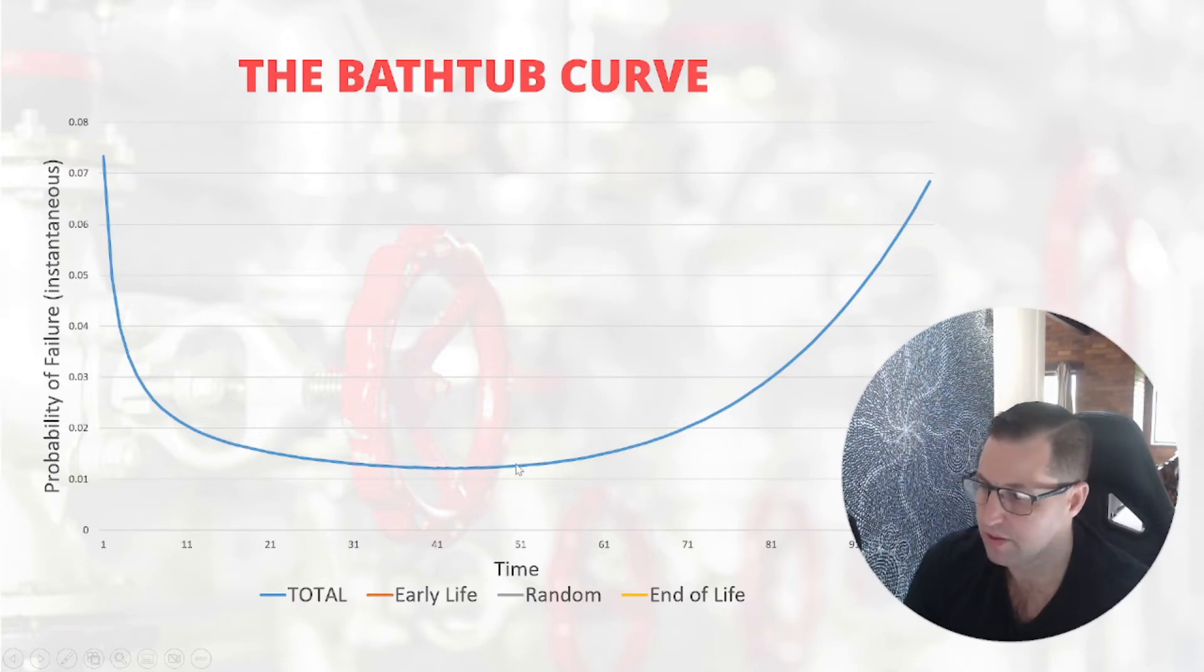And then we move into the end of life, where the probability of failure starts increasing again. It's typically called end of life or wear out phase of an asset's life cycle.